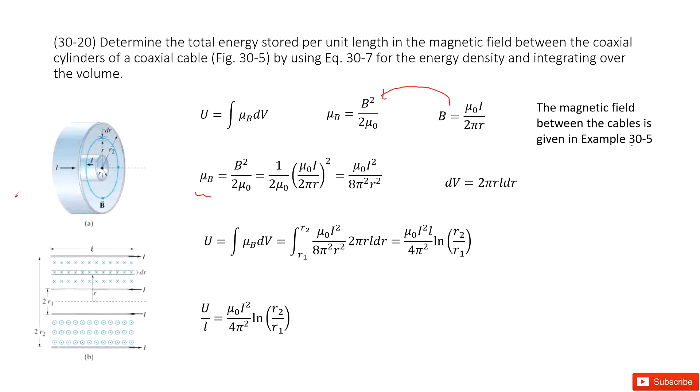And how long is it? l, right? l. So that means the dV can be 2πr dr times l. Now we input μ_B and dV inside to the integral from r₁ to r₂. We get the function.